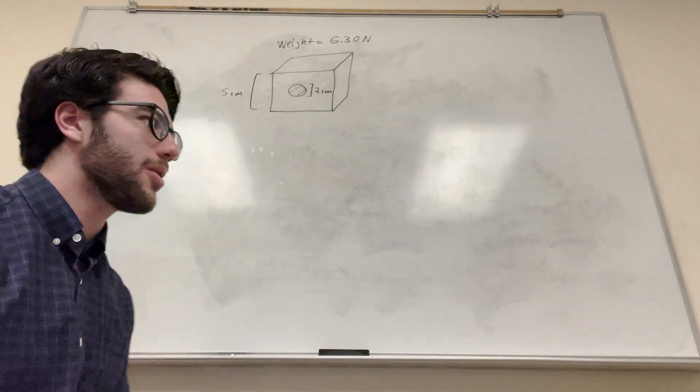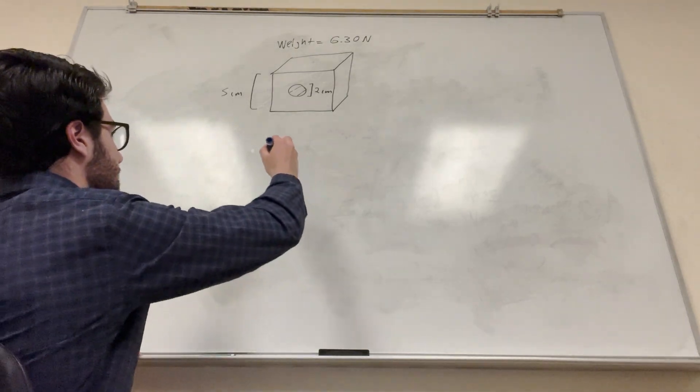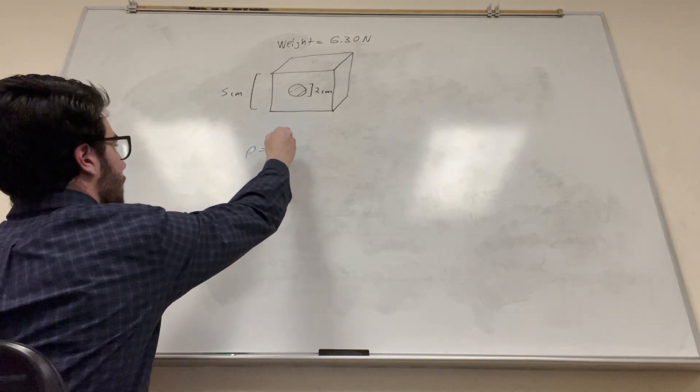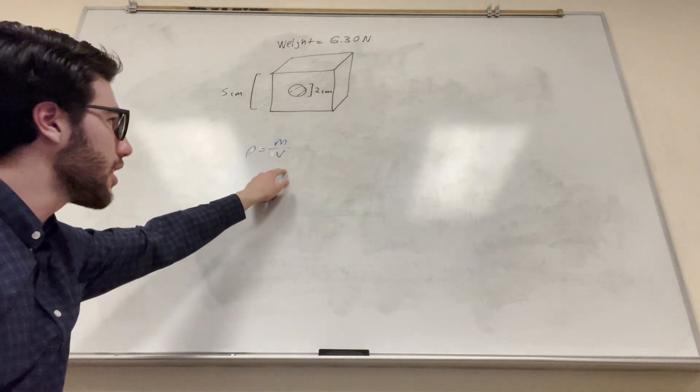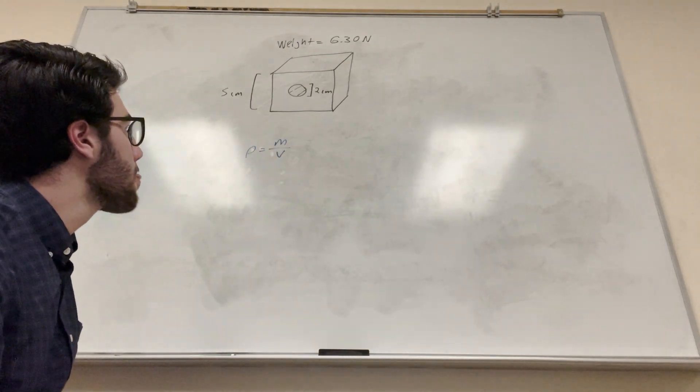So what we need to do to find the density, right? Density is equal to mass divided by volume. So we can calculate mass, and we're going to have to calculate volume, and that's how we're going to find the density. So let's just stick to that.